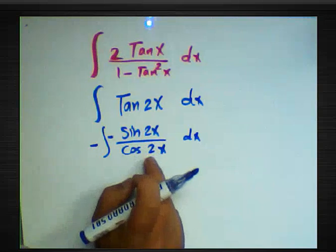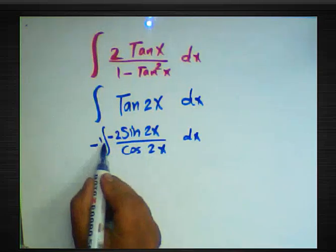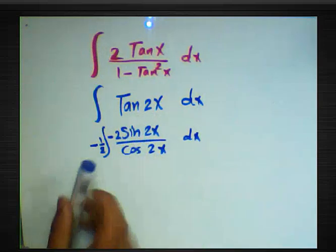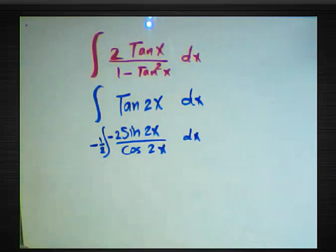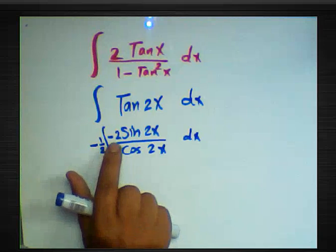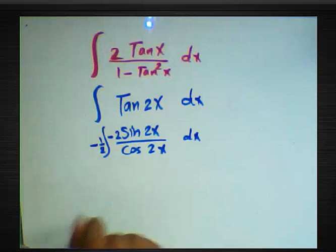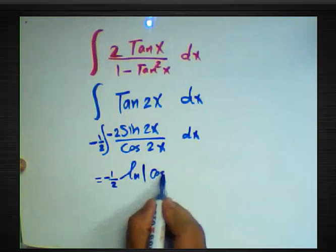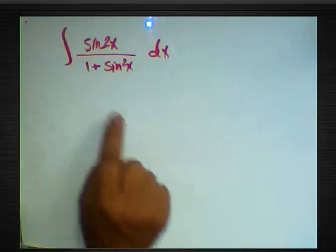For integration of 2tan x / (1 - tan²x) dx, we use the double-angle rule: tan 2x = 2tan x / (1 - tan²x). So we integrate tan 2x, which is sin 2x / cos 2x. The derivative of cos 2x is -2sin 2x, so we multiply and divide by -2, giving -½ · ln|cos 2x| + C.